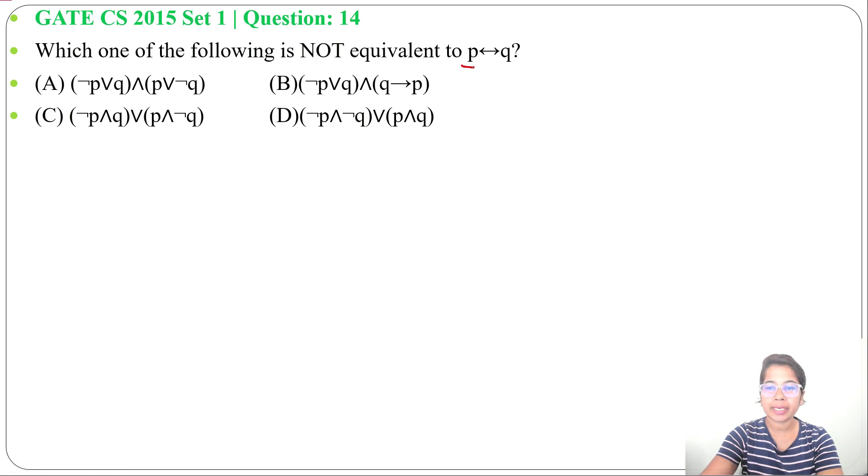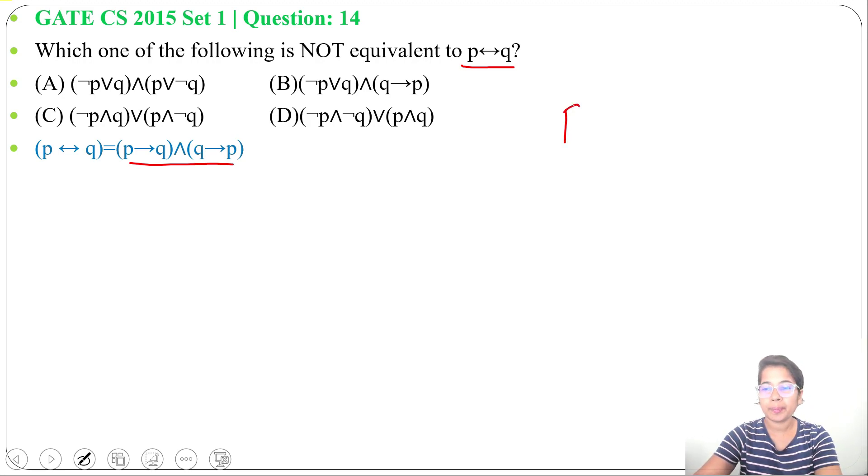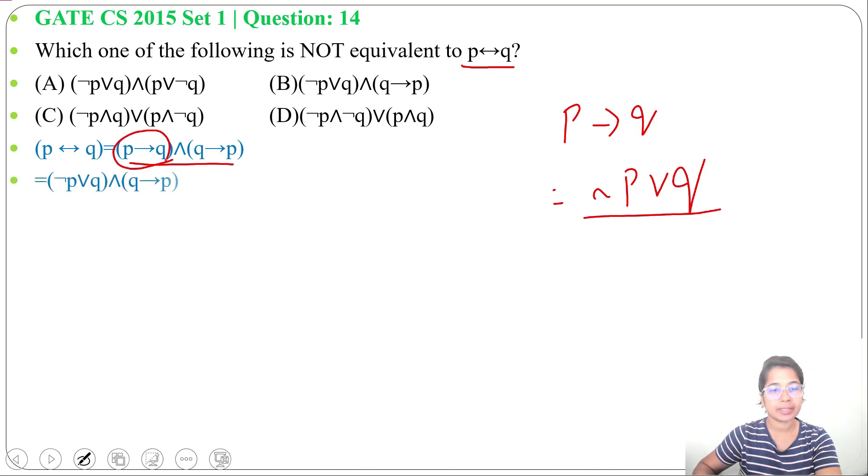P double implication Q, we can write as P implies Q and Q implies P. And we know P implies Q can be written as negation P or Q. So I'll write negation P or Q in place of P implies Q.